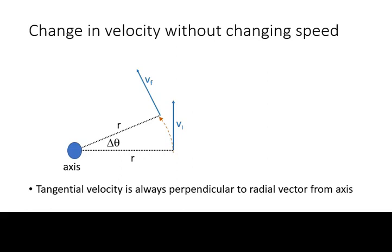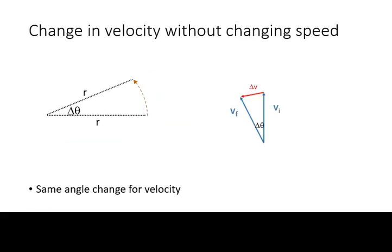Suppose we go in that circle through an angular displacement, delta-theta. Because the tangential velocity is always perpendicular to the radial vector, its change of angle will be the same.